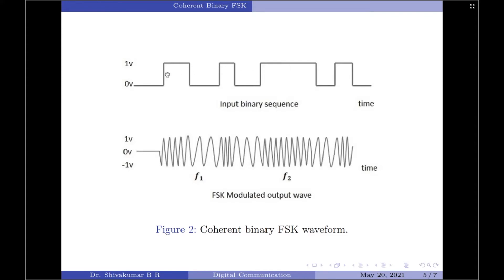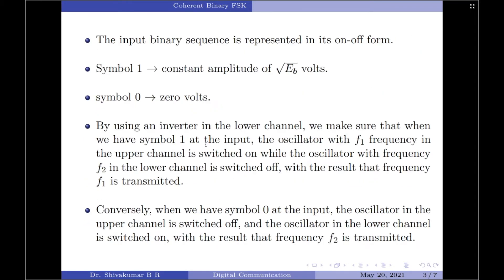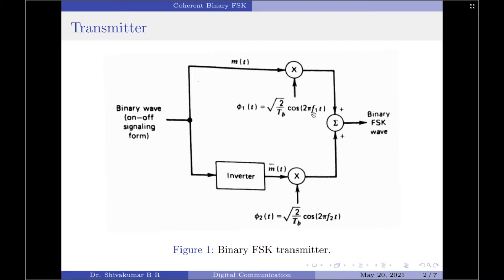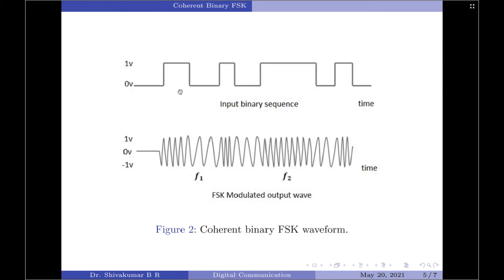I would like to show you why it is called continuous phase frequency shift keying by taking a simple illustration. The binary input sequence shows that symbol one is represented by a constant amplitude of plus root Eb, whereas symbol zero is represented by zero volts. Whenever we transmit symbol one we transmit a carrier with frequency f1, and whenever we transmit symbol zero we transmit the carrier with frequency f2. What is important to note is the phase continuity: even though we are changing the carrier at corresponding bit intervals, the phase of the carrier signal remains continuous — that is why we call this technique continuous phase frequency shift keying.